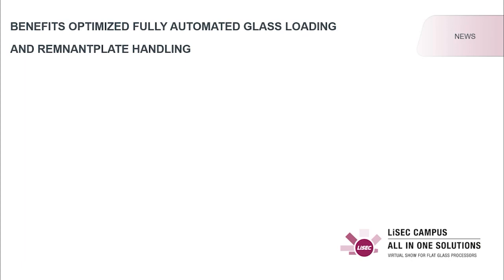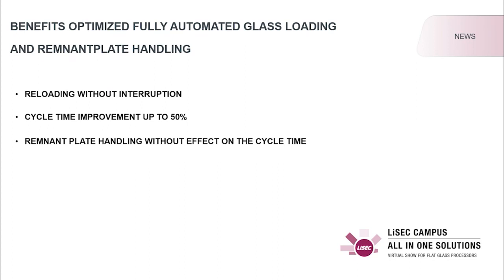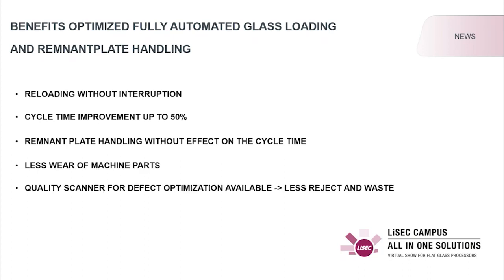Compared to a conventional glass stock, you have less travelways with the optimized solution. Due to the pre-stored stock sheets in the vertical remnant plate buffer RPS, you can reload your glass stock without any interruption. Due to the short travelways and shorter movements, you have a cycle time improvement of up to 50% and less wear of machine parts. If you combine this solution with our transport table TFR with pass function, you can also handle remnant plates without any effects on the cycle time. Optionally, we include a quality scanner for defect optimization in the RTV transport section, which can reduce reject and waste dramatically. Thanks for listening to the news regarding stock management — have fun at the fair.